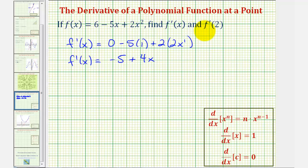Now that we have the derivative function, we could determine f prime of 2, which would give us the slope of the tangent line at x equals 2. So f prime of 2 would be equal to negative 5 plus 4 times 2. This would be negative 5 plus 8 or positive 3.